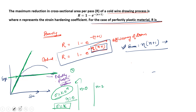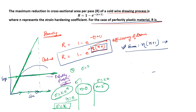For a perfectly elastic material, n = 1. If you put n = 1, sigma = k * epsilon. As you keep increasing epsilon, sigma keeps increasing proportionally up to infinite strain with no plastic deformation — that's why it's called perfectly elastic. For real materials like steel and aluminum, n ranges from about 0.1 to 0.5.